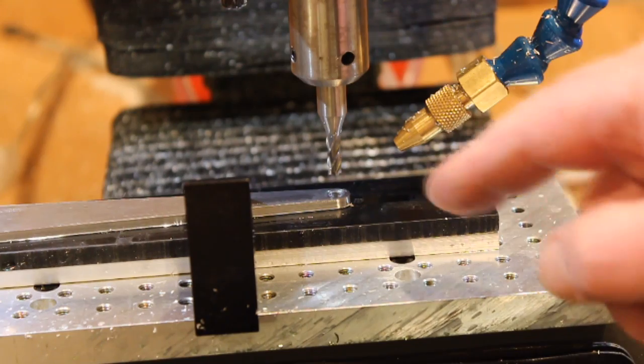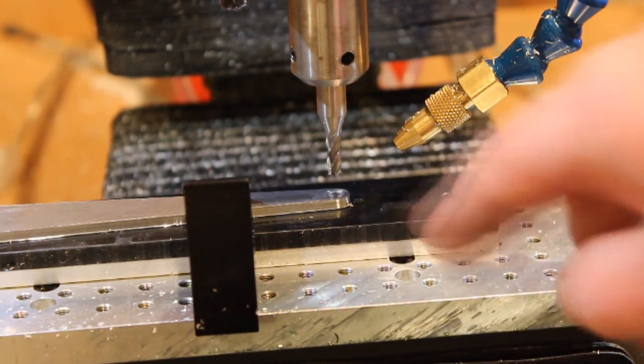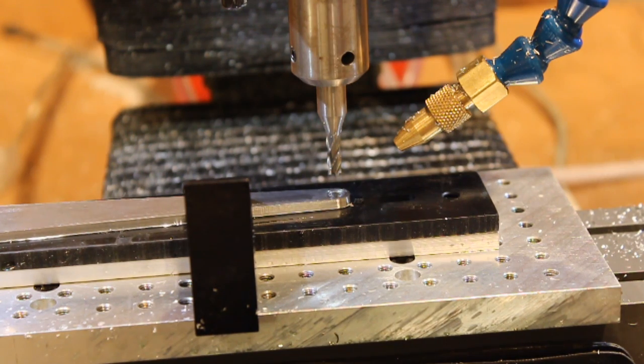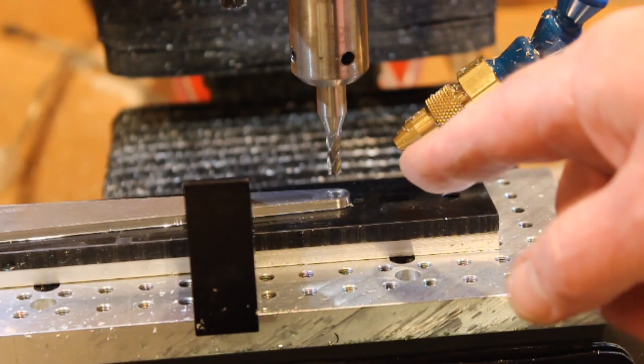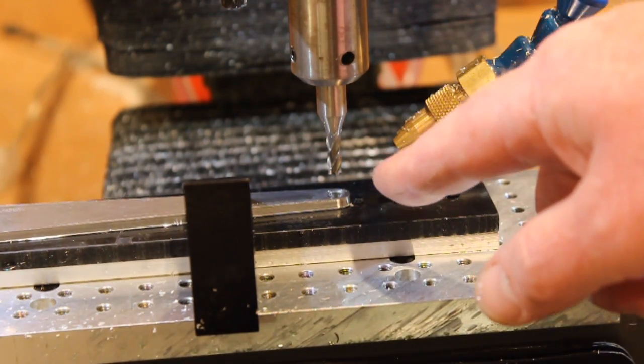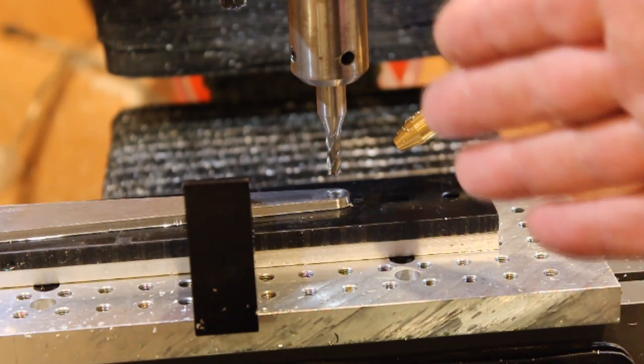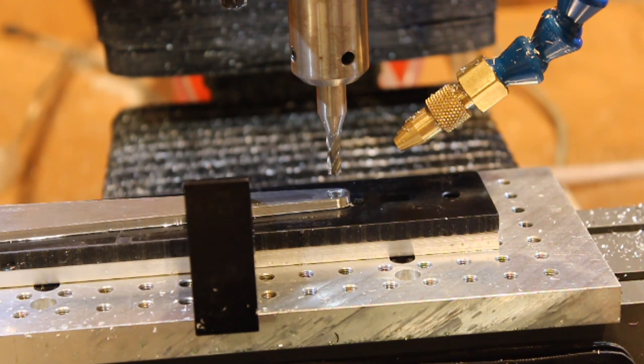Instead I'm going to use the same end mill I've been using and just mill out a pocket slightly undersized. I know that will end up being exactly where it needs to be, and then we'll just use a reamer like I've shown you before and open that hole up to the exact size.